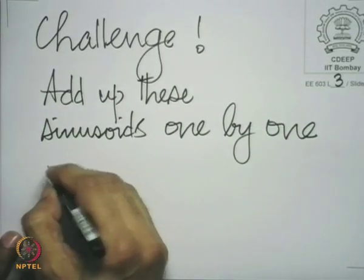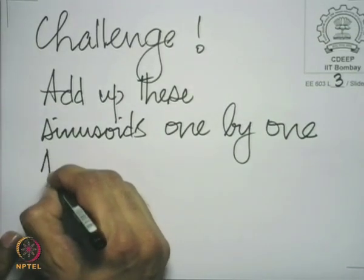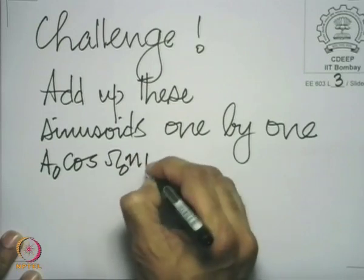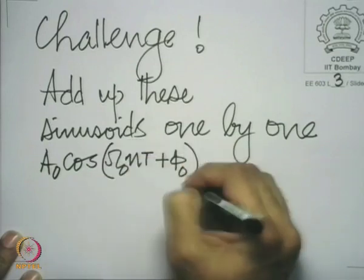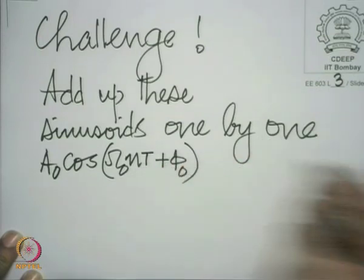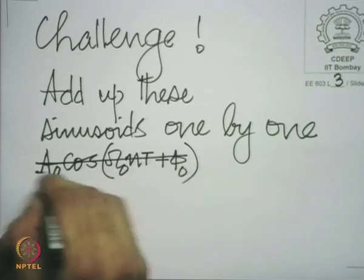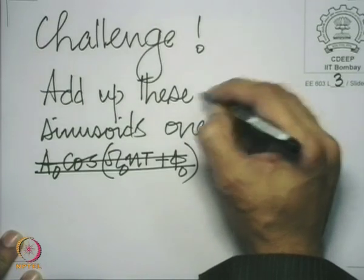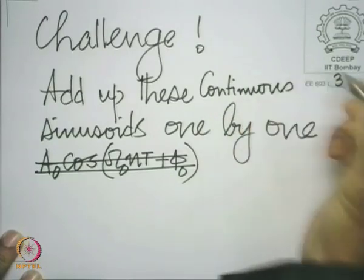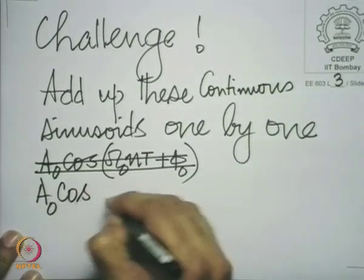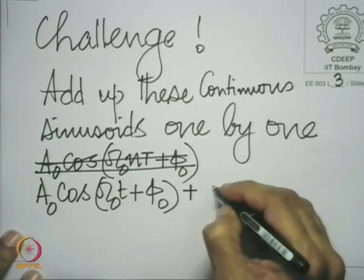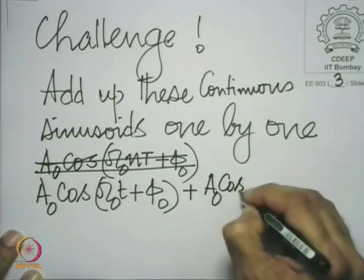What I mean is: take the sum A₀ cos(ω₀ t + φ₀). Let us add continuous sinusoids rather than evaluating at sampling instants, because at the sampling points you would get infinity and there is nothing much to be seen. So we should sum the continuous sinusoids, not the sinusoids evaluated at the samples.